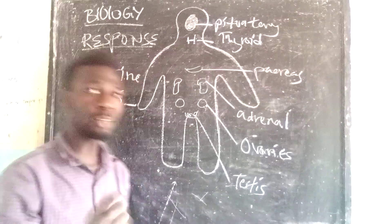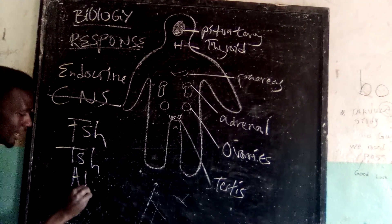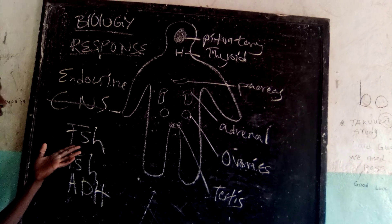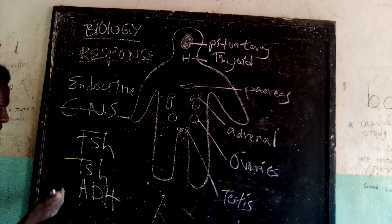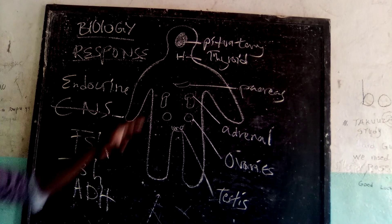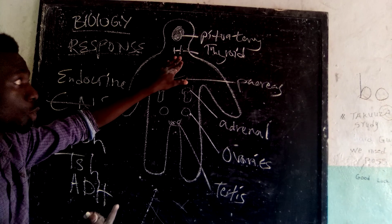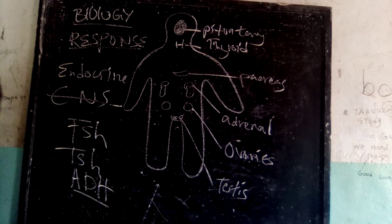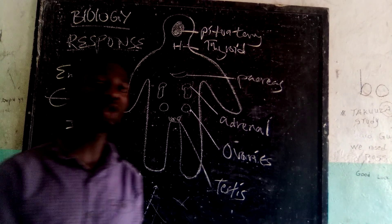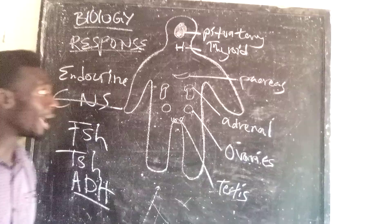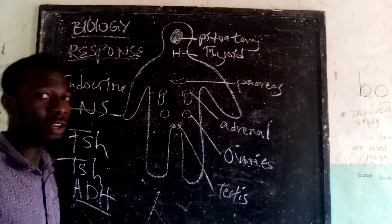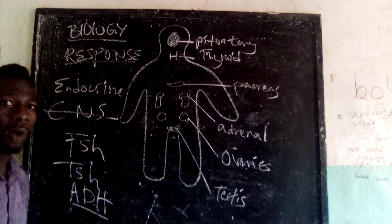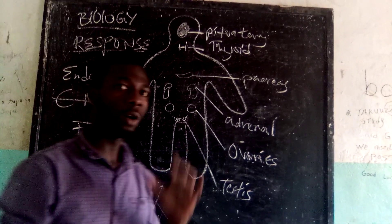There are three main hormones that we have to know which come from the pituitary gland. We have FSH, TSH, as well as ADH. FSH is the follicle stimulating hormone found in women — this helps women to produce eggs. TSH is the thyroid stimulating hormone, meaning it produces a hormone which stimulates the thyroid gland to function. ADH is the antidiuretic hormone; it controls the amount of water or the water potential in our body. When your body has little water, the ADH is produced and it goes to the kidneys, into the nephron, and absorbs all the water back into the body.